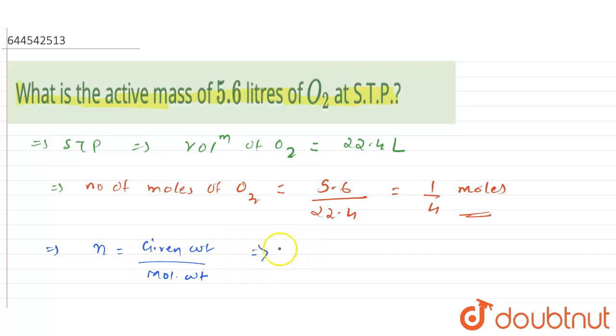We can find it by substituting the values and doing some rearrangement. That is: given weight = n × molecular weight. The molecular weight for oxygen is 32 grams per mole. That can be found as 16 + 16, which equals 32.